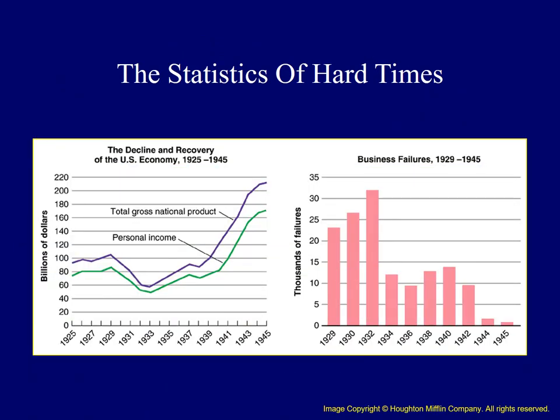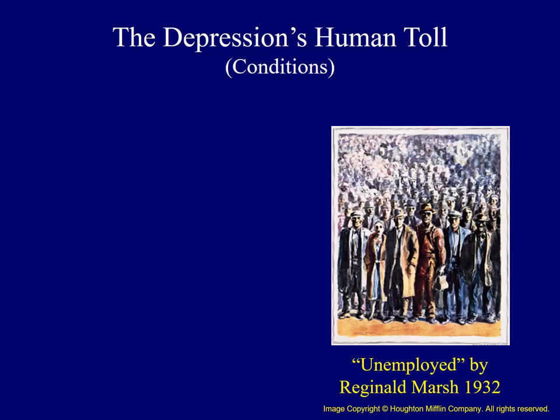These tables of statistics show the hard times that the American people faced during the depth of the Great Depression. On the left, we see the decline and recovery of the American economy. Notice personal income and gross national product at a low point in 1933. On the right, we see business failures — 1932 was the worst year for businesses failing. The Depression's human toll was seen in incredibly high unemployment figures. In 1933, unemployment nationwide was at about 25%. Some cities were hit even worse.